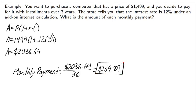I'd like to point one thing out: $169.89 per month for 36 months is how much you're really paying for the computer, whereas the original cost of the computer was $1,499. So to get the computer a little bit earlier than you could otherwise pay for it, you end up paying over $500 extra — not necessarily worth it.